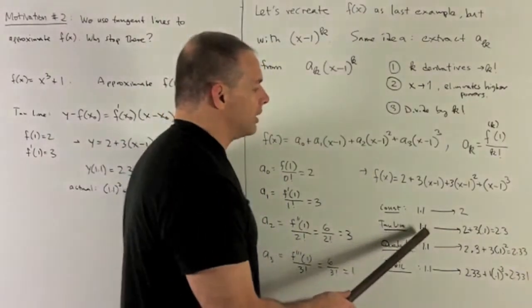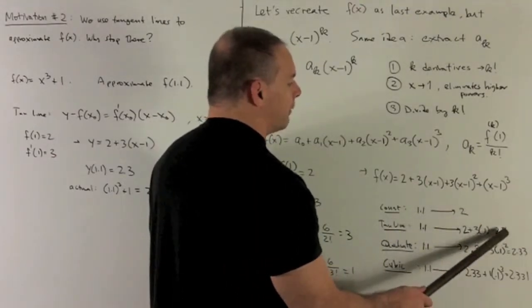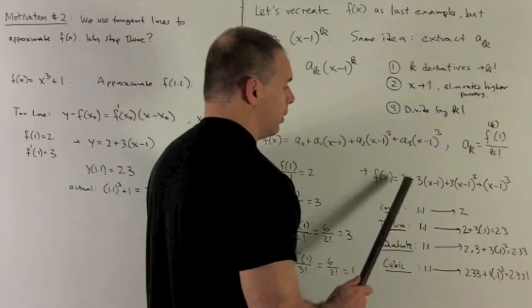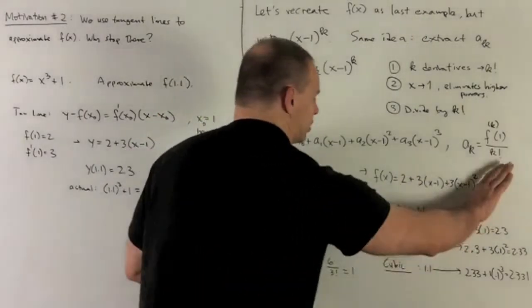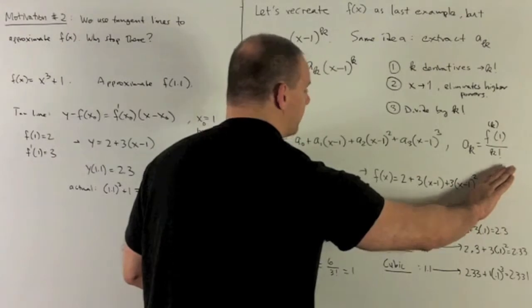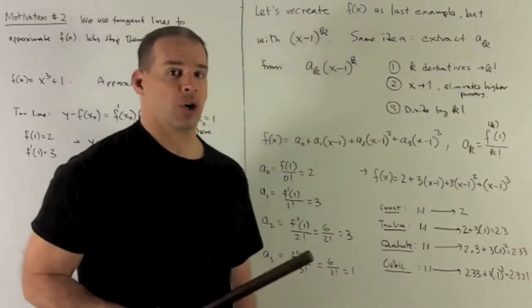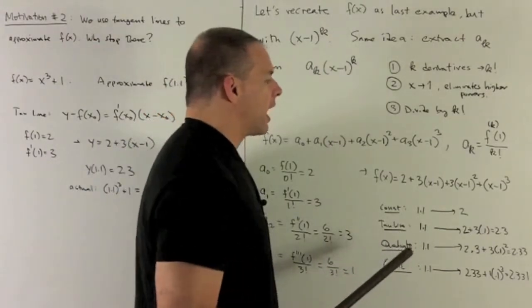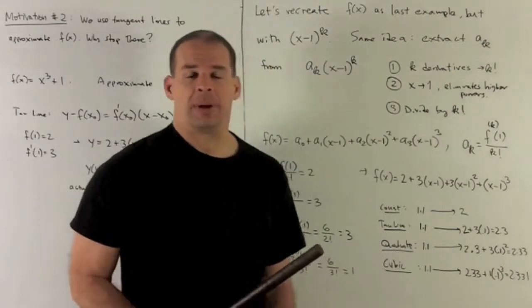We put 1.1 into the tangent line. That's going to give me 2.3. So we see we're getting a little bit of improvement as I allow more and more terms. I just get rid of the cubic part now. So I'm looking at a quadratic. So this is going to be some parabola if we were to draw the picture. Put 1.1 into there, and we notice we get 2.33. So this thing's shaping up.